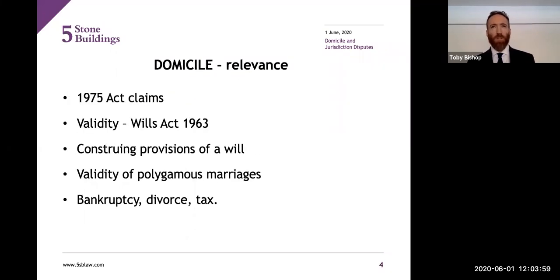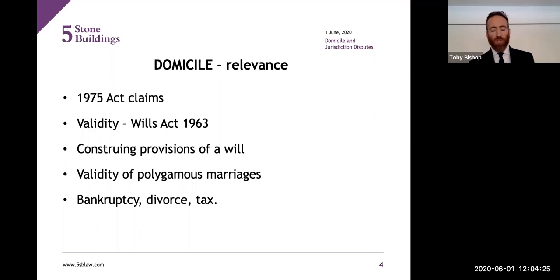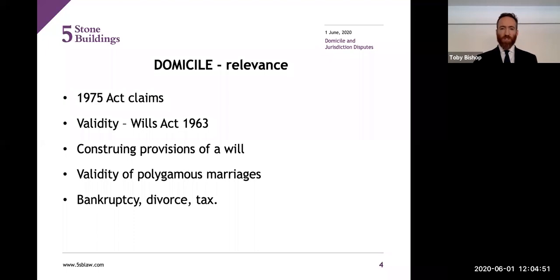We're going to start with domicile. If you're a private client litigator, domicile is important to you — it may have already come up in your practice. It's the gateway into a 1975 Act claim: if the deceased wasn't domiciled in England when they died, the court doesn't have jurisdiction to hear it. It's also a route into validity under the Wills Act 1963, and it can affect how you construe certain provisions of the will, the validity of marriage, distribution in intestacy, and so forth. The same rules apply in bankruptcy, divorce, and tax contexts.